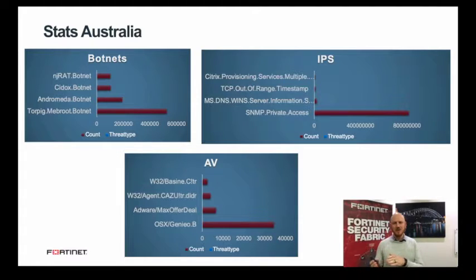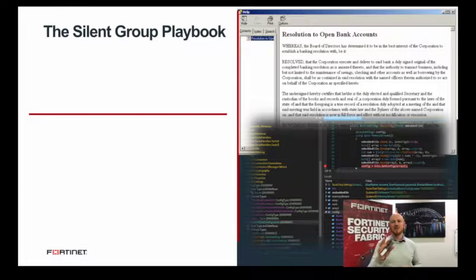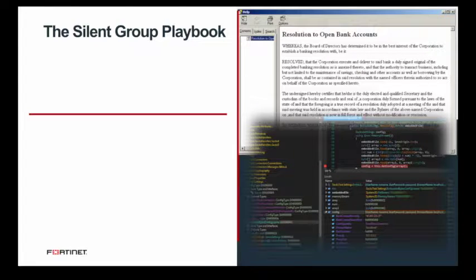On the AV side, the biggest threat in Australia is the OS X Genio browser hijacker, targeting Mac systems and behaving like adware, first released in February 2014. The FortiGuard research team has been creating adversary playbooks in conjunction with the Cyber Threat Alliance, documenting what threat actors are doing and how to potentially disrupt malicious activity. The FortiGuard team maps this activity back to the MITRE ATT&CK framework — a comprehensive matrix of tactics and techniques used by threat hunters, red teamers, and defenders to better classify attacks and assess organizational risk.